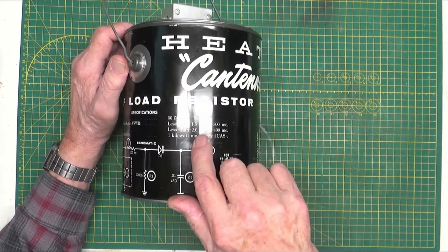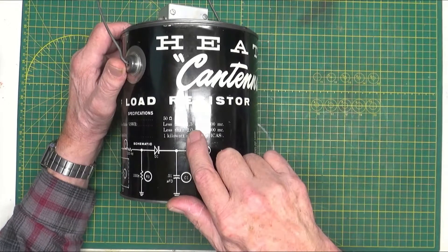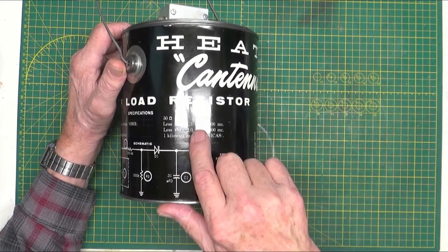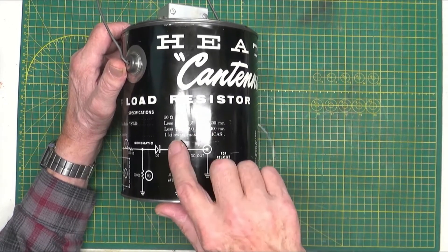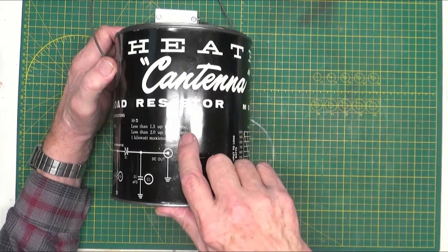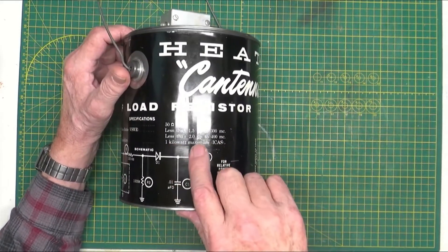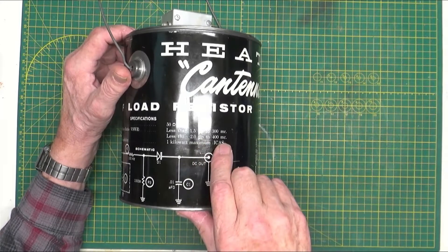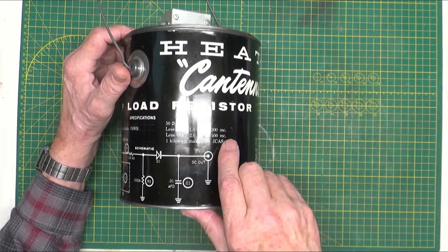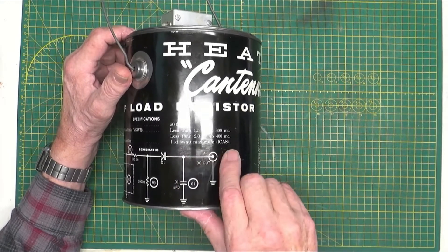It says less than 1.5 SWR up to 300 megacycles—megacycles, that shows you how old it is—less than 2 to 1 up to 400 megahertz, and one kilowatt maximum.